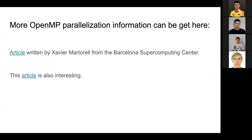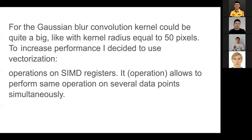There are several articles I used during preparation of this code and presentation, which I share on this page. The reason I am using linear convolution is for Gaussian blur. Gaussian blur uses two linear convolutions — one vertical convolution and one horizontal convolution. The kernel size can be quite large; in my case the radius of the kernel is equal to 50 pixels, which is quite big, so I decided to use vectorization.